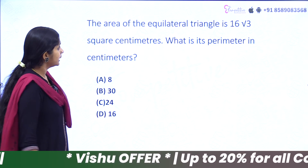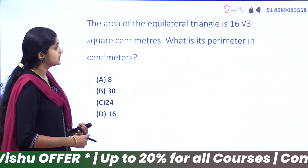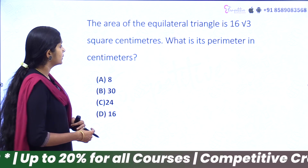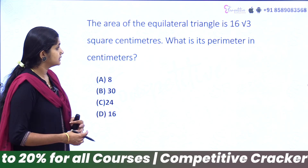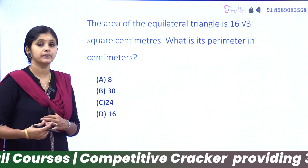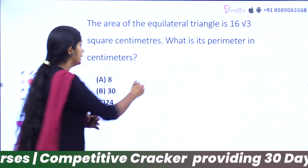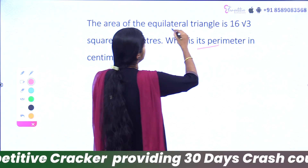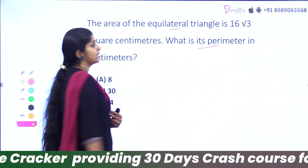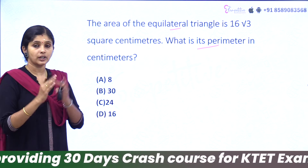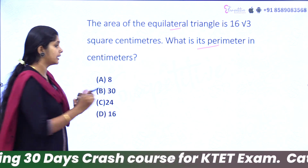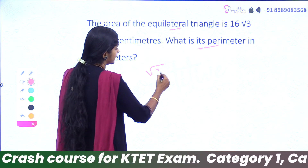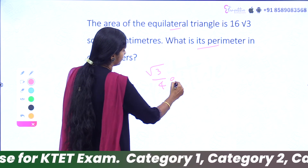The area of an equilateral triangle is 16√3 square centimeters. What is the perimeter in centimeters? We use the formula: area = √3 by 4 times a squared.